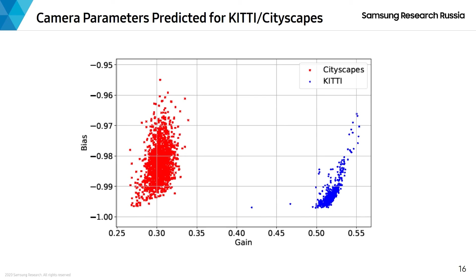On this scatter plot, we can see the distribution of gain and bias parameters output by our camera parameters estimation CNN for the CS+K dataset. The clear separation of the clouds for Cityscapes and KITTI datasets reflects the fact that those datasets were collected using different stereo rigs, thereby confirming the utility of our camera parameters estimation CNN.